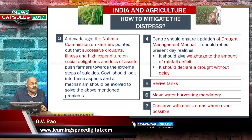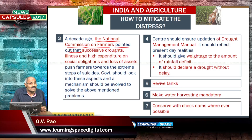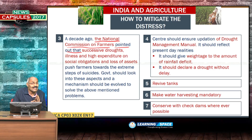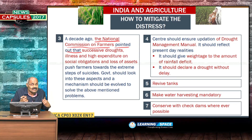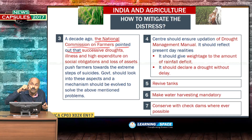A decade ago, the National Commission on Farmers pointed out four reasons for farmer suicides: successive droughts, illness due to lack of proper medical facilities in rural areas, high expenditure on social obligations, and loss of assets. When farmers fall into a debt trap, they are forced to sell land. Because of these four reasons, farmers are pushed towards the extreme step of suicide.